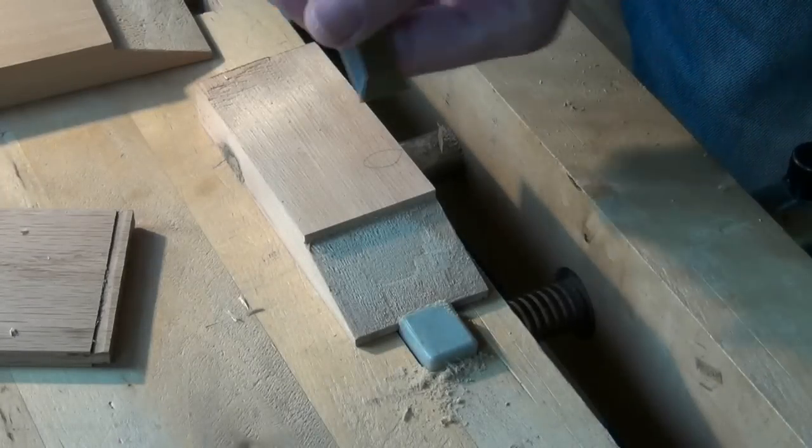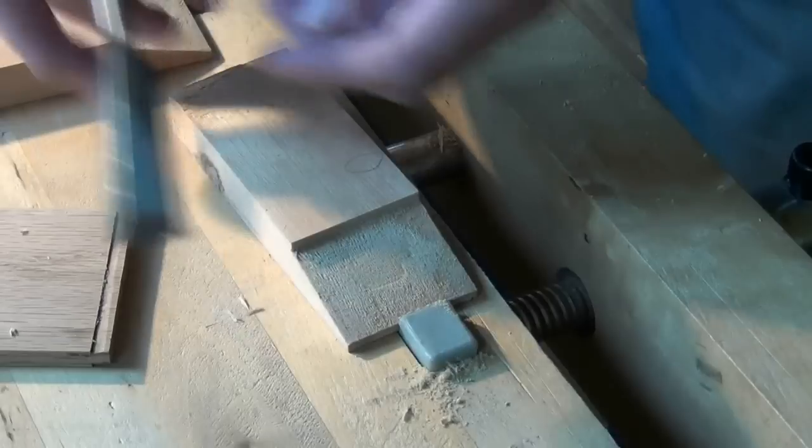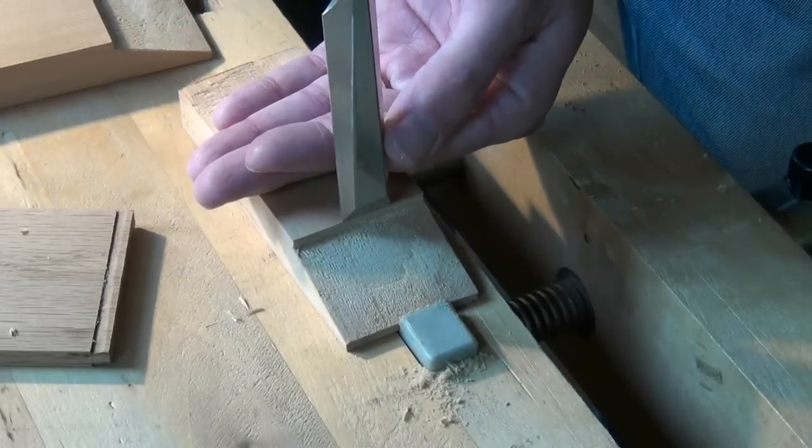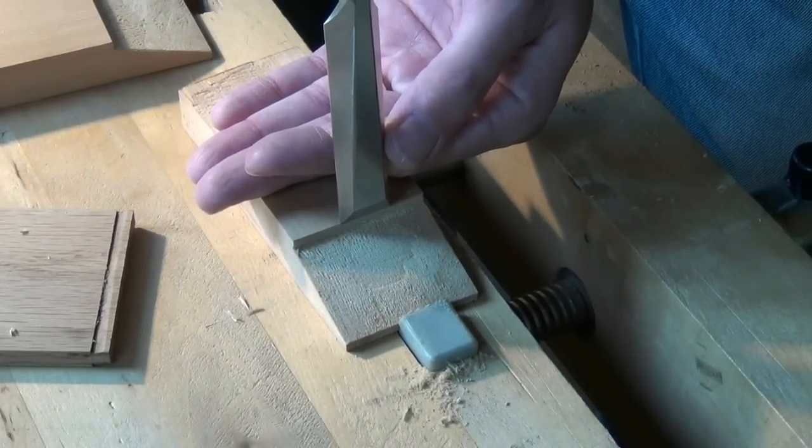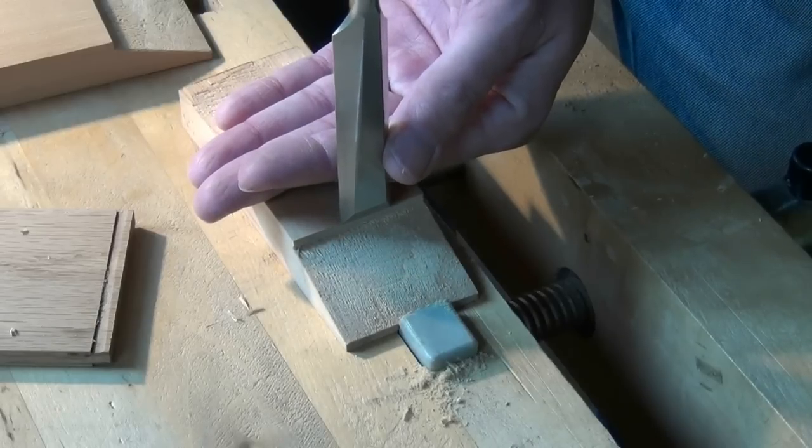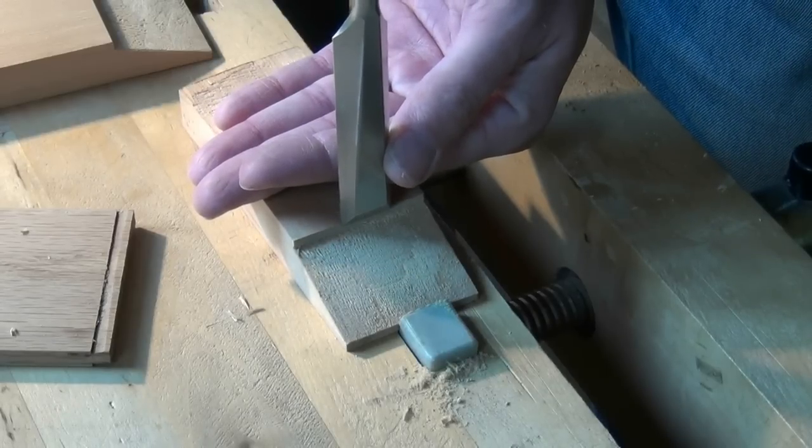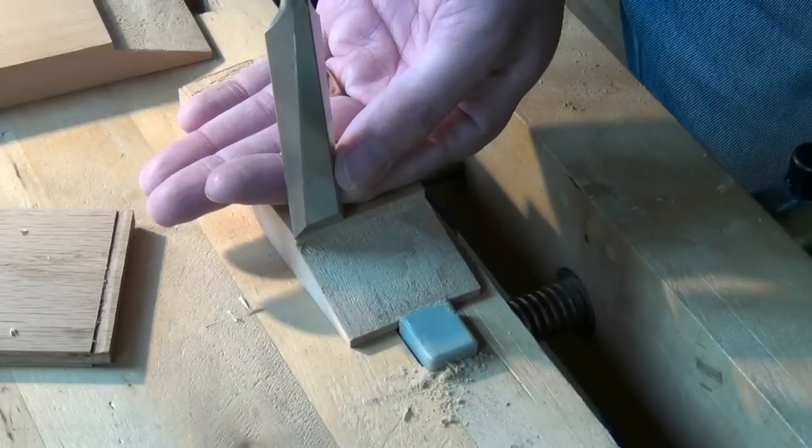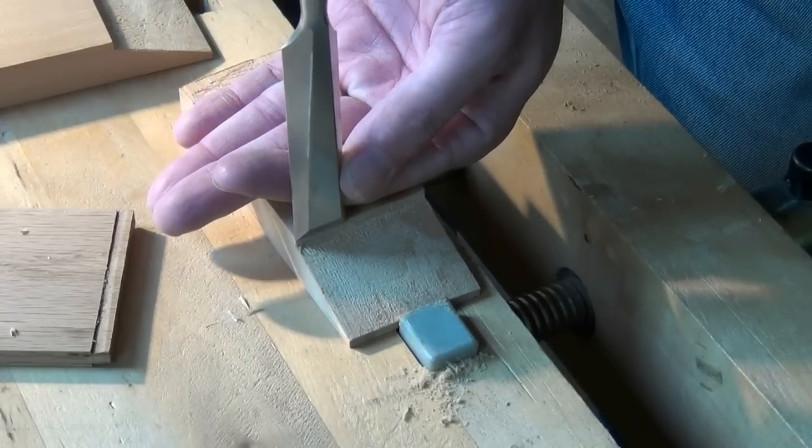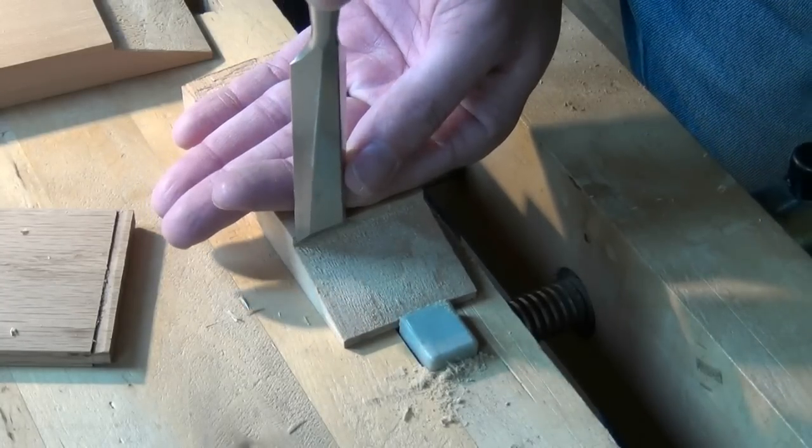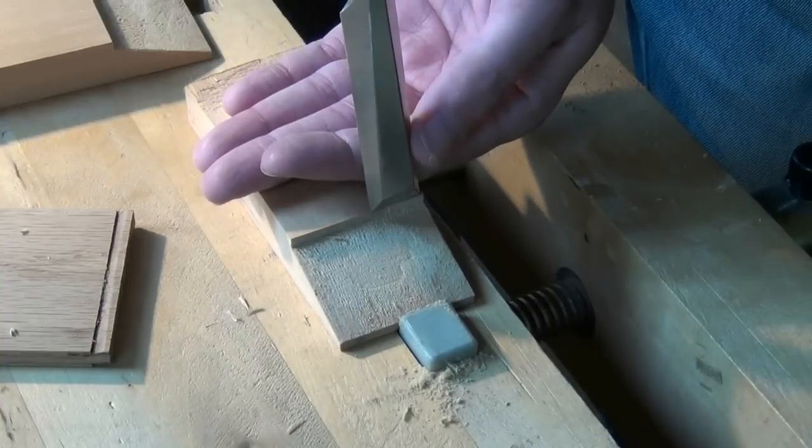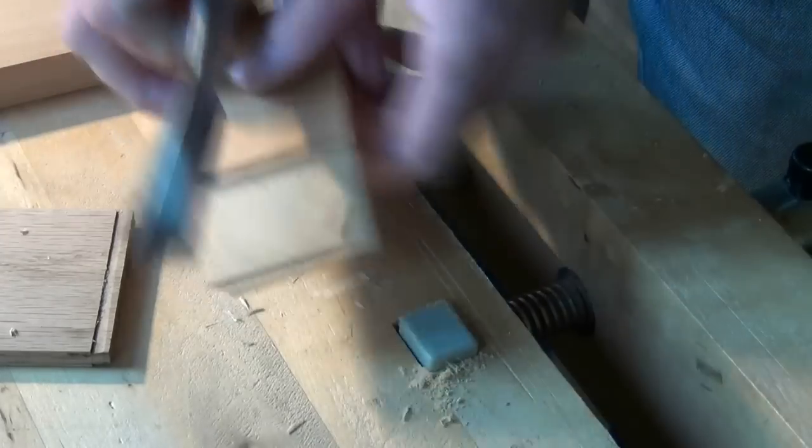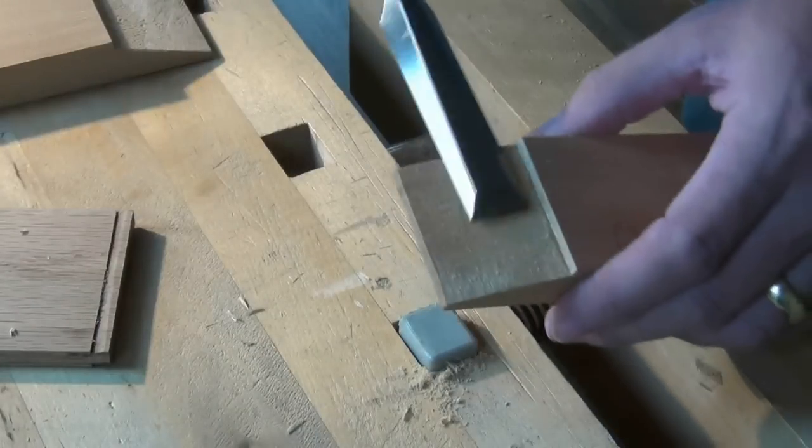We need to finish off with a chisel on our knife line just to square that up nicely. So feed the chisel onto the knife line and straight down and just clean up into the corner there.